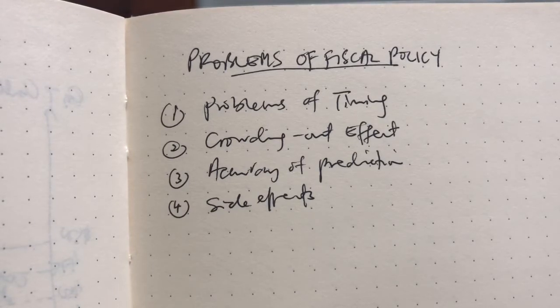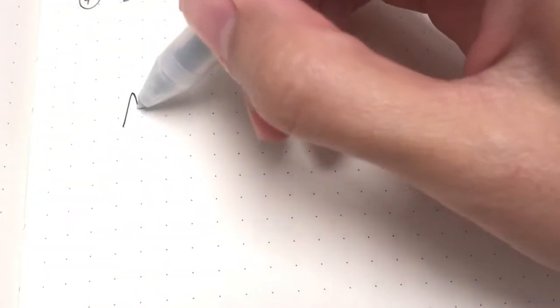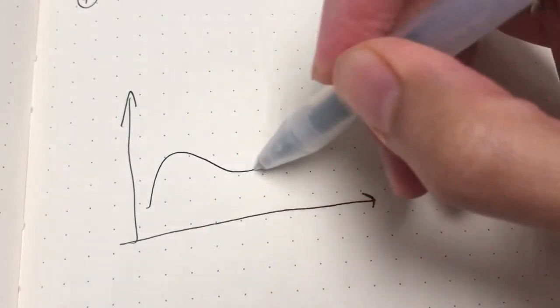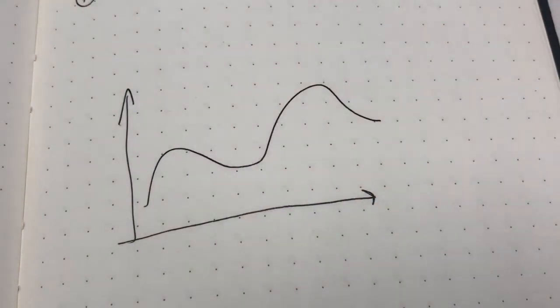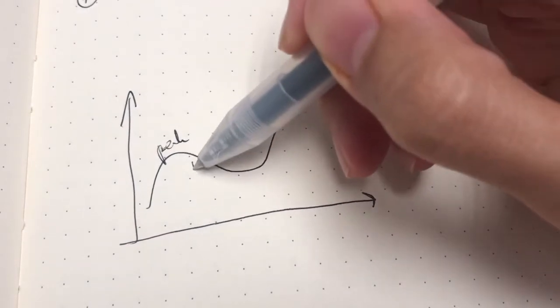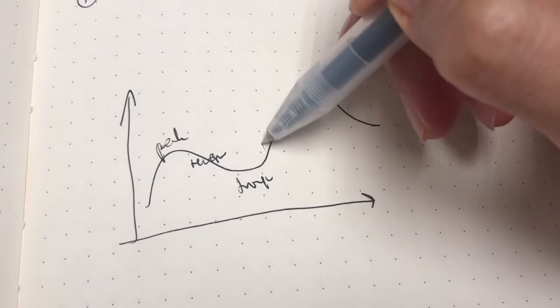There are several. The first one we should look at is problems of timing. You may recall our business cycle, right? We have several phases in the business cycle: here's the peak, here's recession, here's the trough, and here's the recovery phase.